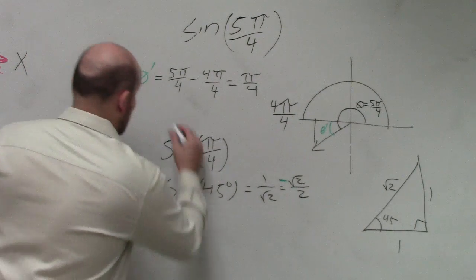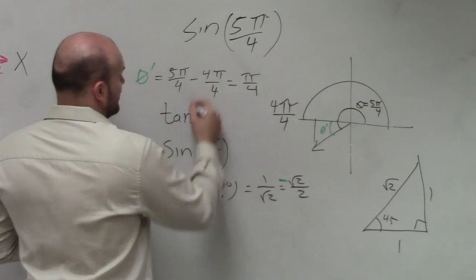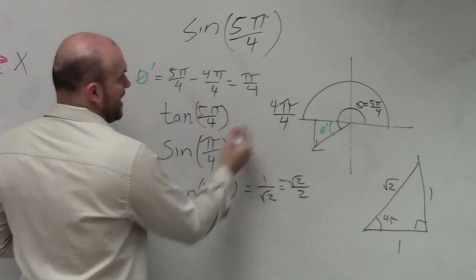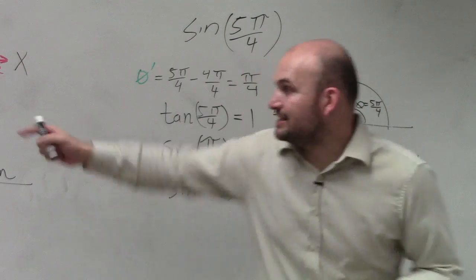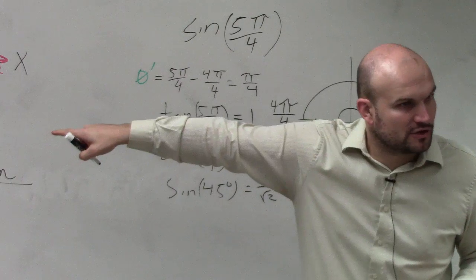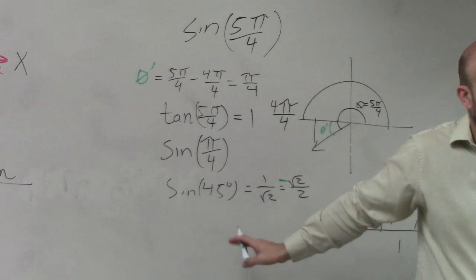If I said, what is the tangent of 5 pi over 4, that would just equal 1, right? And it's positive, because tangent is positive in the third quadrant. The cosine would also be negative, right?